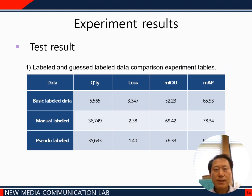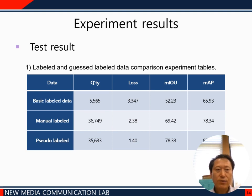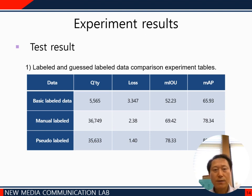On this page, we present the experimental results. For basic label data with 5,565 pseudo-label samples and manual label data with 36,749 samples and 35,636 pseudo-label samples: in the case of loss, as shown in the table, when working with pseudo-label, the loss was 1.4%. mIoU was also the highest at 78.33%, and the mean AP was also the highest at 83.29%.